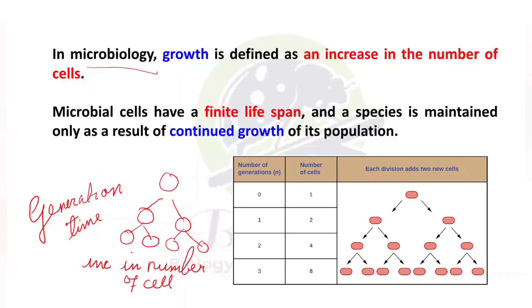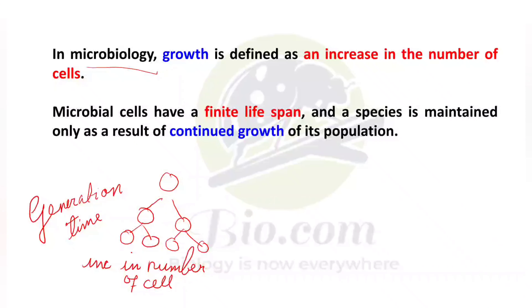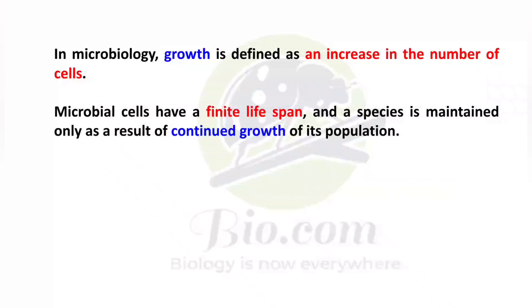Microbial cells have a finite lifespan — a cell will only continue its metabolic activity for a certain period of time. To continue its growth, it must go through the reproduction phase, after which new cells arise. The bacteria will show its metabolic activity for a definite time span, after which it divides into a new population to maintain that population.